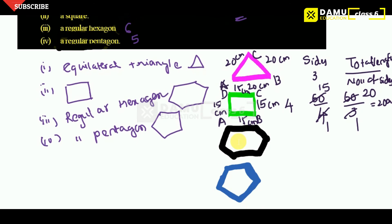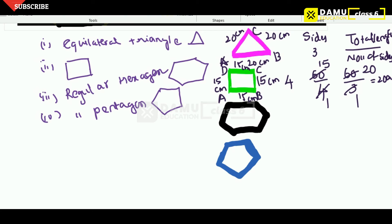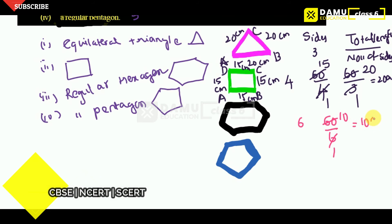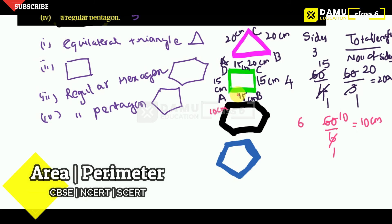Next, regular hexagon. The number of sides will be 6. So each side equals 60 divided by 6, which is 10 centimeters. Each side — A, B, C, D, E, F — will be 10 centimeters.